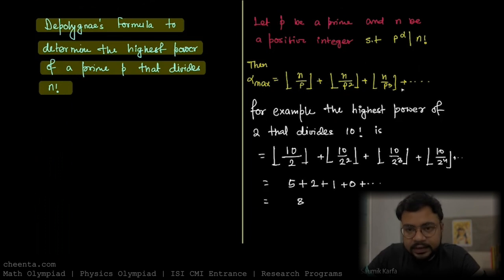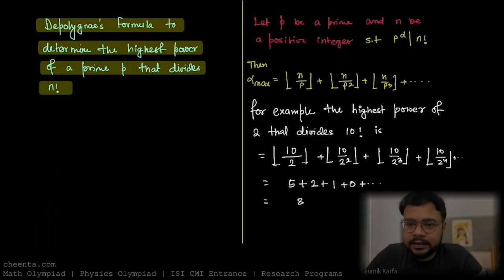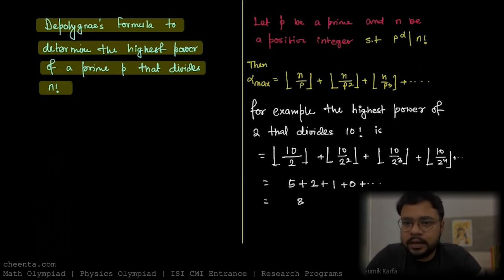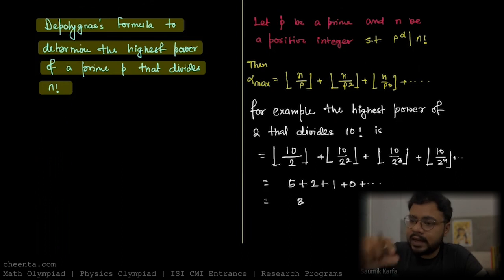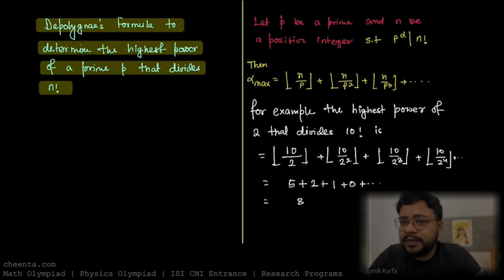So alpha max is obtained with this summation: floor of N over P, plus floor of N over P squared, plus floor of N over P cubed, and so on. This sum looks infinite but is not, because after a certain term, the power of the prime exceeds N — the denominator grows while the numerator stays fixed. Eventually N over P^k becomes less than 1, so its floor is 0, and all subsequent terms are also 0.